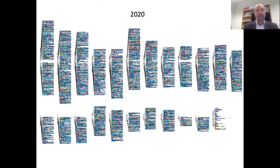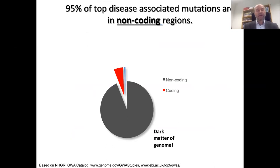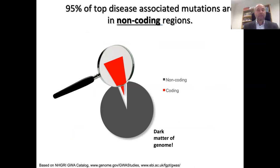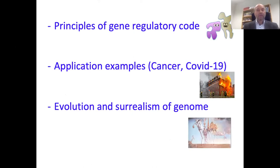The striking fact is that almost 95 percent of those top disease-associated variants are located in non-coding regions, and only five percent or maybe a bit more are located in the coding regions. We traditionally pay more attention to coding region mutations because we know the code and can interpret it, and we almost forget the role of non-coding mutations, although they are the majority — 95 percent.